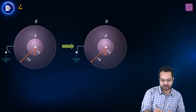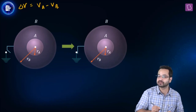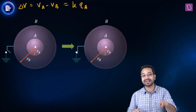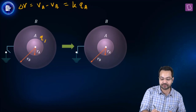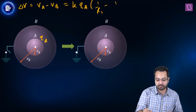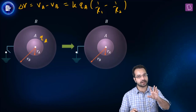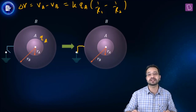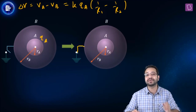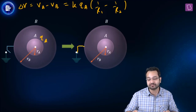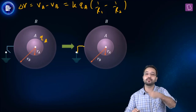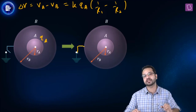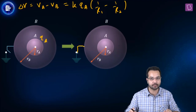Initially the potential difference VA minus VB equals K into QA multiplied by (1/R1 minus 1/R2), where QA is the charge on the inner sphere. Now we have earthed conductor B. When earthing takes place, the potential of B becomes zero — charge may go from B to Earth or come from Earth to B, but ultimately the potential of B becomes zero.